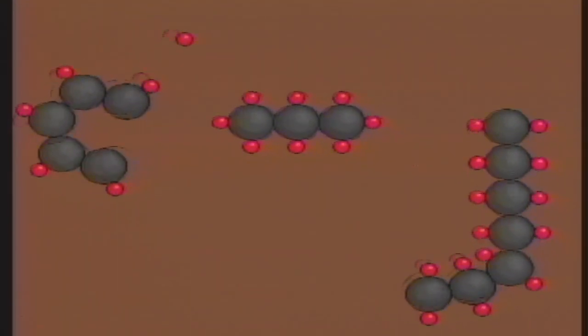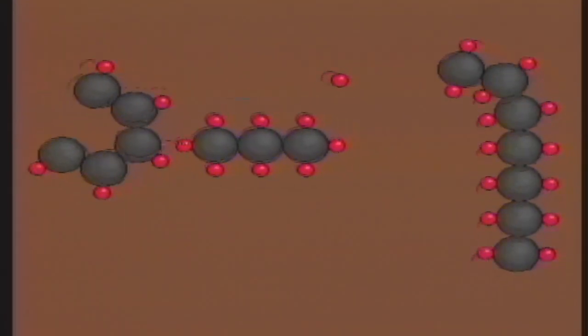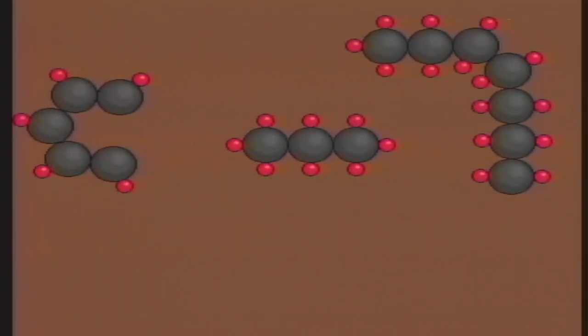Oil is a mixture of these chains of carbon and hydrogen called hydrocarbons. The shape and structure of these chains or rings determines the kind of product we get from the oil. Covalent bonds are strong, but can be broken by heat or a catalyst.